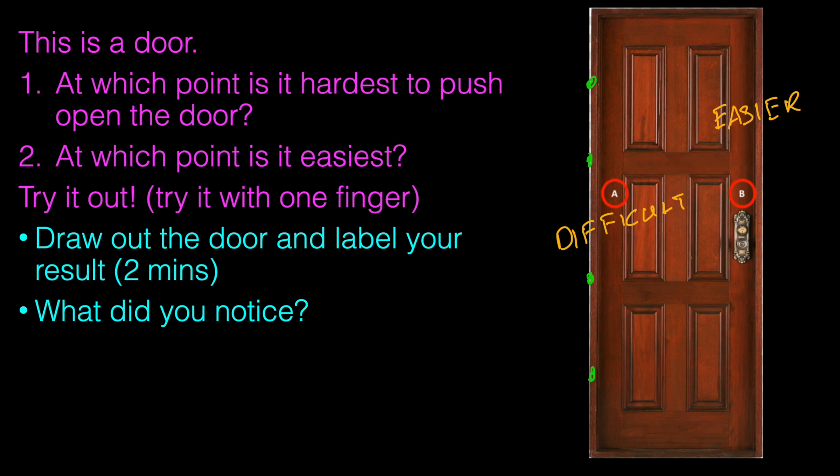The reason is due to the distance between these two points and the hinges. The distance between A and the hinge is relatively small, but the distance between B and the hinge is much larger. This difference in distance accounts for the difference in the turning force.